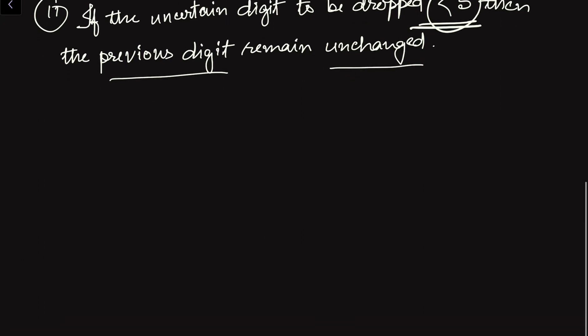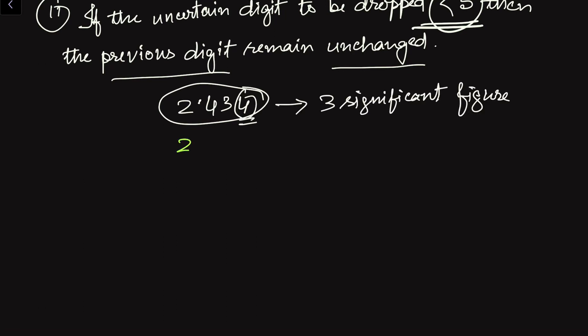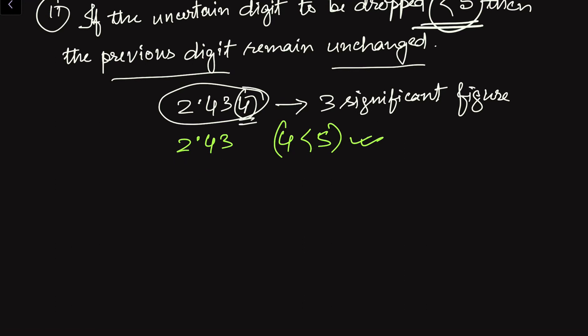Let us see one example. Suppose we have a length of 2.434 meters and we want to express this measured value into 3 significant digits. We drop the 4 — since this 4 value is less than 5, we have 2.43. Here we have 3 significant digits. You have to use this second rule for values to be dropped that are less than 5.